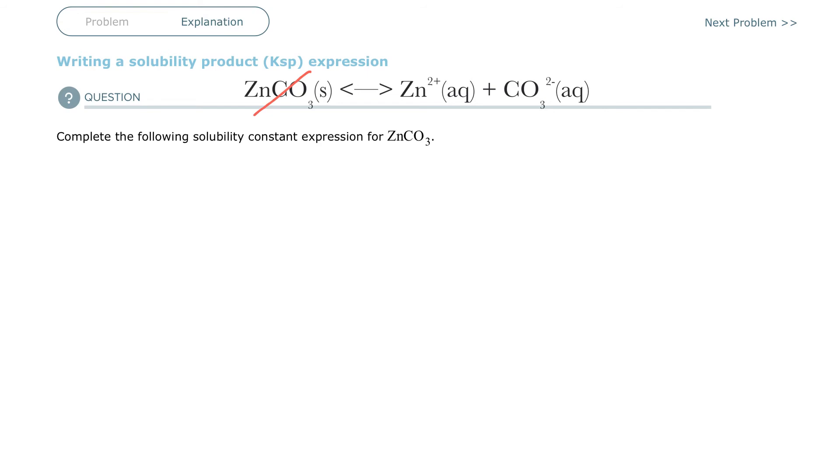So that means that our Ksp is going to be a product, and that's why it's called a solubility product. That's the SP, solubility product.